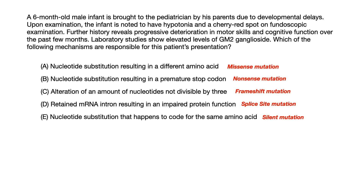The point of this practice question was structured in three orders. The first-order part: do you recognize Tay-Sachs disease from the vignette? The second-order part: can you pair Tay-Sachs with its type of DNA mutation — alteration of nucleotides not divisible by three? The third-order and most challenging part: do you know not only that Tay-Sachs is caused by a frameshift mutation, but can you identify the correct description of that mutation explicitly?